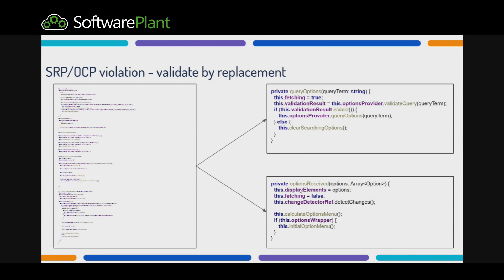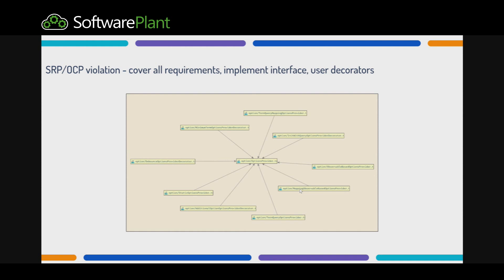One side is replacing old functionality with a new interface. The other is implementing that interface, and you can do it in two steps. You can take all the conditional statements that were there before and put them into a single class, or you can build a family of classes — decorators, and so on. That's the second part of the job. If you extract it and it works, that's already great. Then you can refactor that extracted part further.